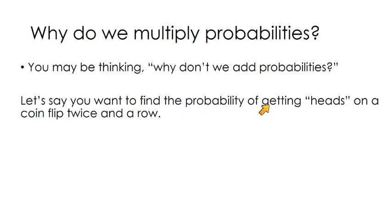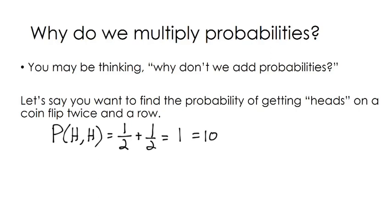Let's say we want to find the probability of getting heads on a coin flip twice in a row — heads and then another heads. If you were trying to add, you would say the probability for the first coin flip is one half, and one half for the second coin flip. If you added those you'd get one, or a hundred percent. That doesn't make sense. The probability of a compound event will never be greater than the probability of the individual events.